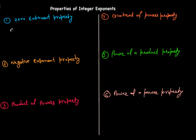The first property of integer exponents is the zero exponent property. If you have a number a raised to the power zero, where a is not equal to zero, the answer is one. Any number raised to the power zero always gives you one. For example, two raised to the power zero is one, four raised to the power zero is one, and even two squared raised to the power zero is one.